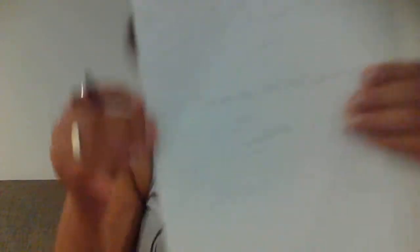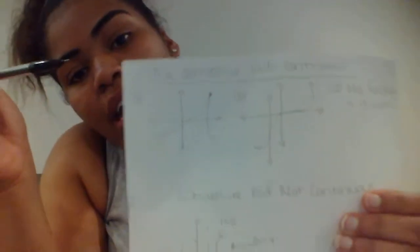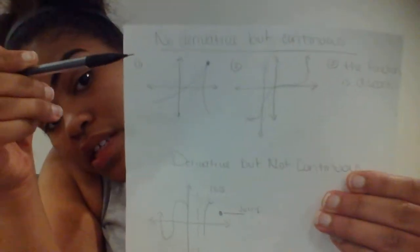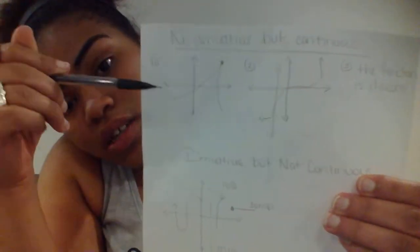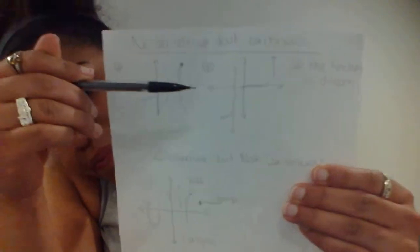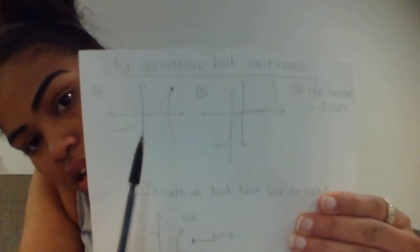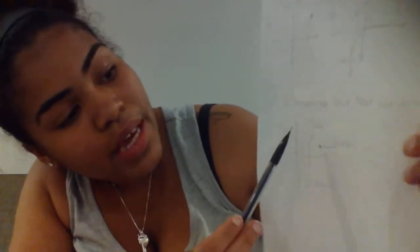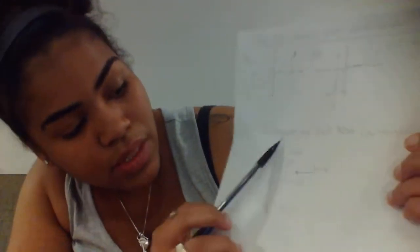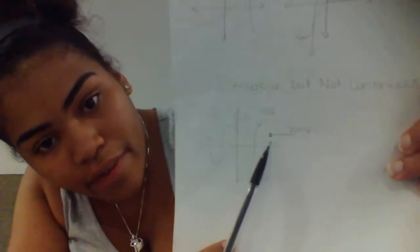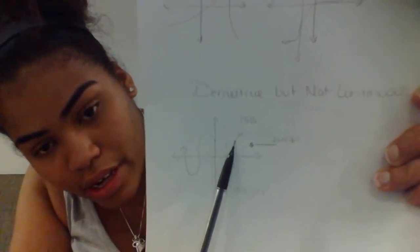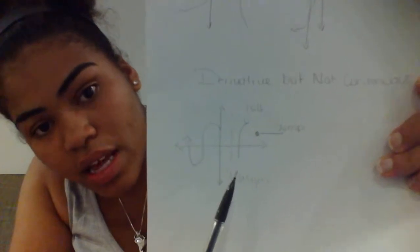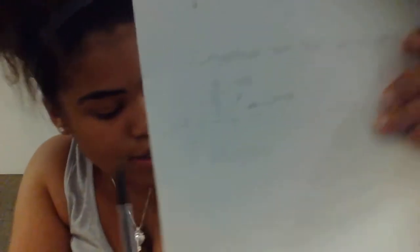Next we have graphs. We have graphs with no derivatives but are continuous. These graphs — one, two, and three — have no derivatives but they are continuous. Then we have derivatives but not continuous, where we have a jump in the graph, a hole in the graph, and asymptotes. These are not continuous.